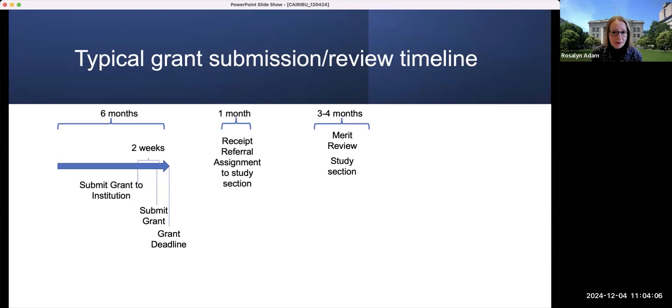There are essentially two outcomes at the study section. Either the grant is not discussed or it is discussed. If it's discussed, it will receive a fundable score and then move forward to the second level of review, the council review, after another period of time. And at that point, the decision will be made whether or not the grant will actually be funded.